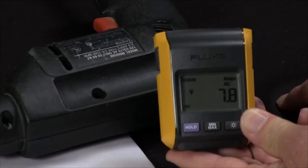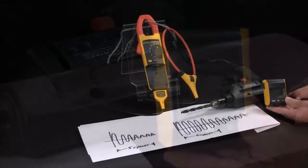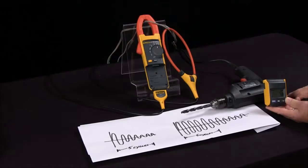This is how you can measure inrush current with the Fluke 381 advanced remote display clamp meter.